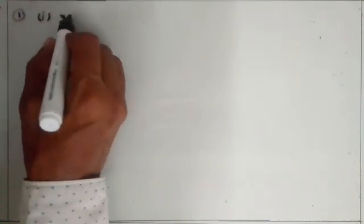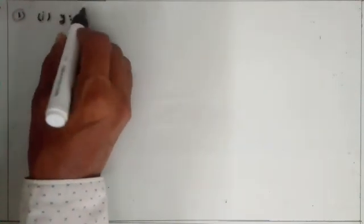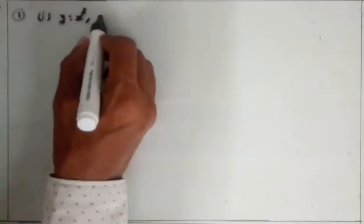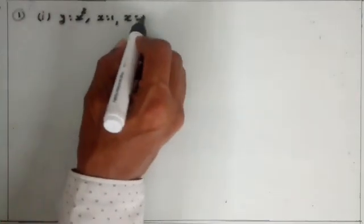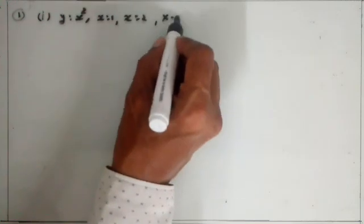Question number 1 of miscellaneous exercise: find the area under the given curve and given line. Number 1: y is equal to x square, and lines x is equal to 1, x is equal to 2, and the x-axis.